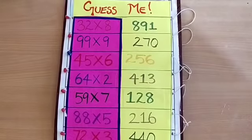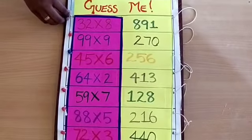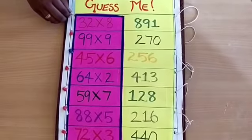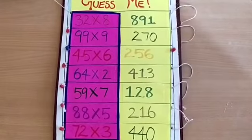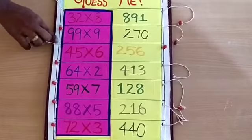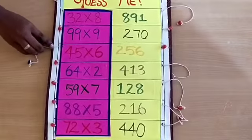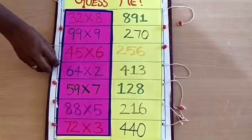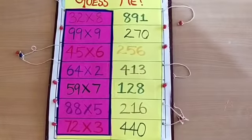Let us test our brain, whether you are remembering your tables or not. 30 into 8 is 256. Then 45 into 6 is 270. 64 into 2, the answer is 128.